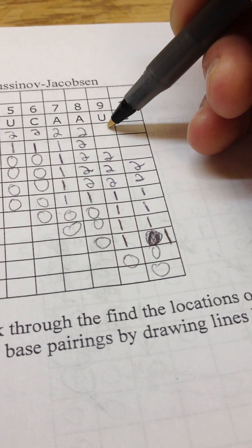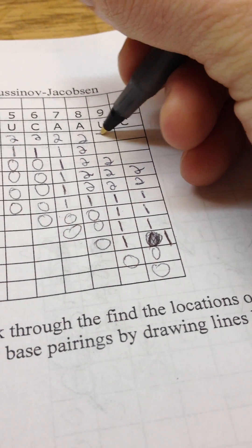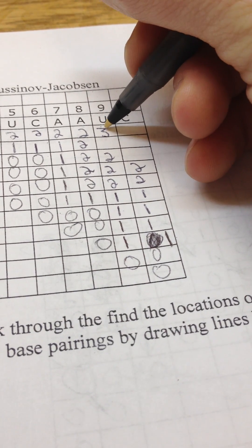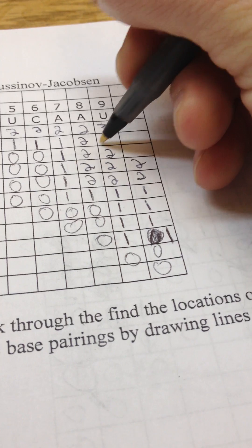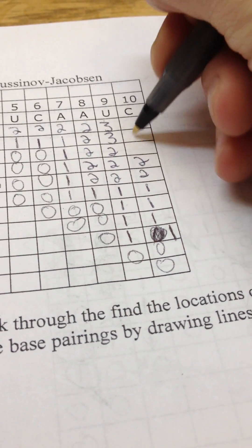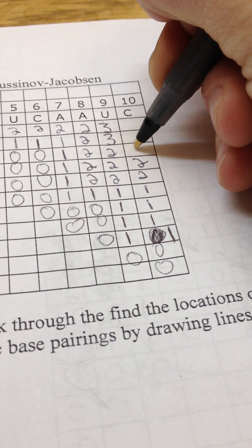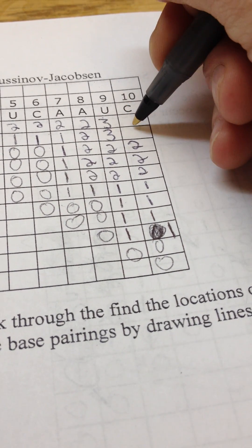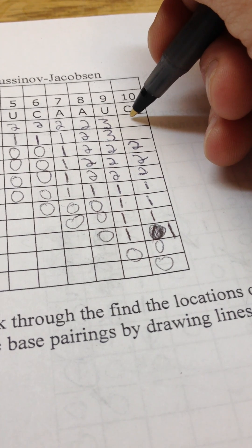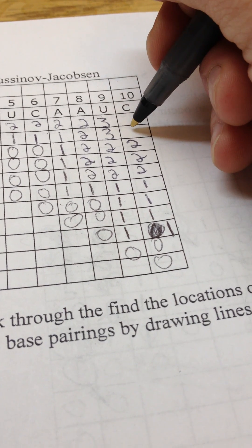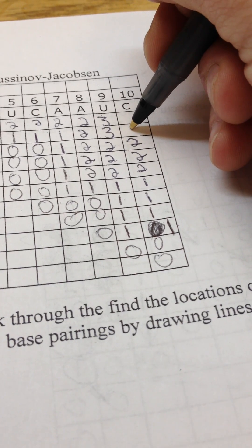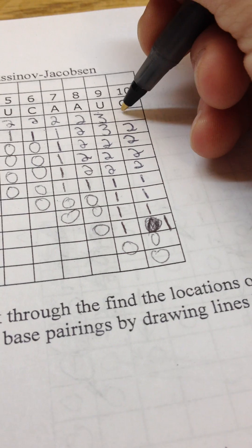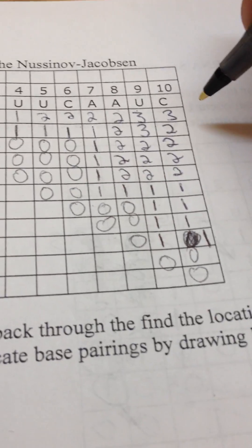And two. U to A does match, we can make this a three if we look down to the left and add one. And then we have U to A which does match, add one. And then C to C does not match, keep that at two. And as we finish up, we have C to A, which will become a two, and then this will become a three. So that's how you do the chart.